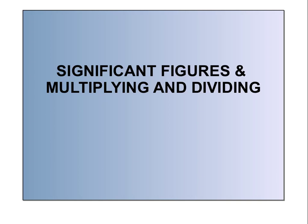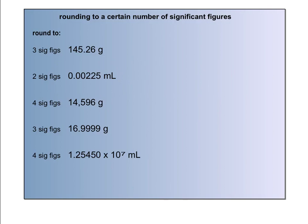In science, we often use our measurements in calculations. So the question is, how do we round our answers? In this lesson, we're going to talk about how we round our answers when we multiply and divide according to significant figures. Please grab a calculator so you can calculate along with this lesson. When you multiply and divide measurements, rounding your answers involves rounding to a certain number of significant figures. So we're going to practice that skill first.